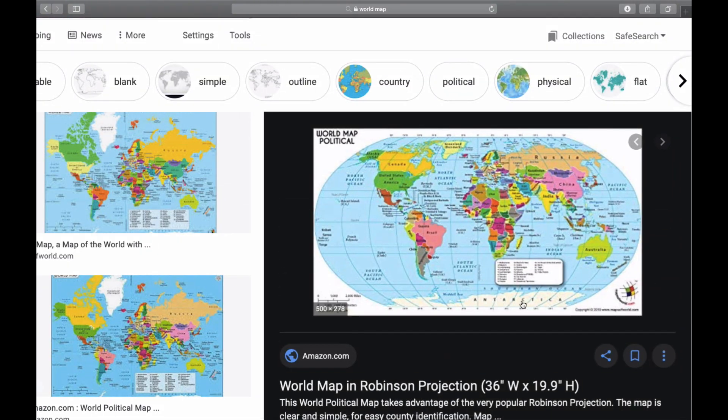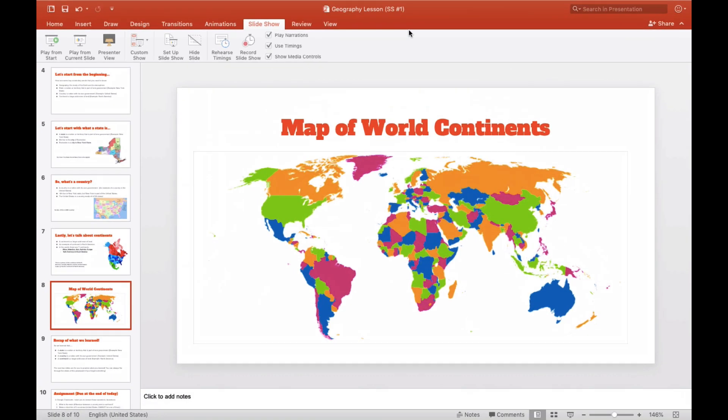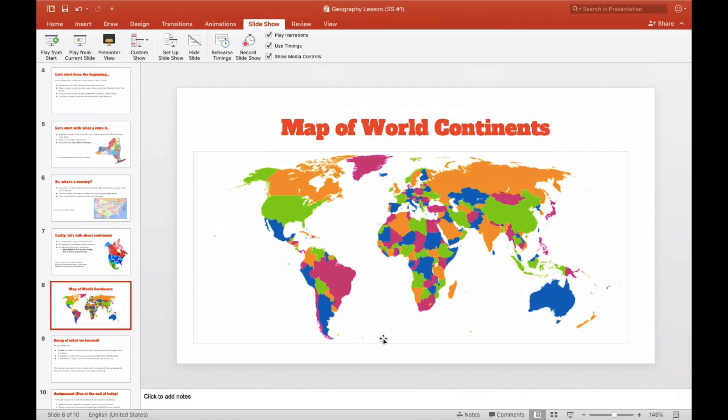There's Antarctica all the way at the bottom. Remember how I would say in the class, please go sit down in Antarctica? That's what I mean. You would sit here at the bottom of the rug, if this was our rug. So North America, South America, Antarctica, Africa, Europe, Asia, Australia. Seven.